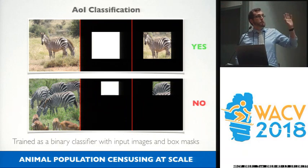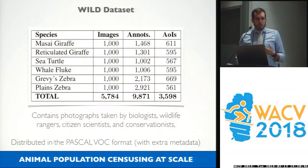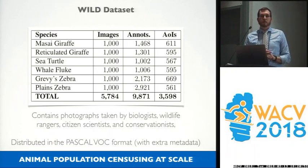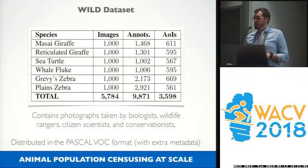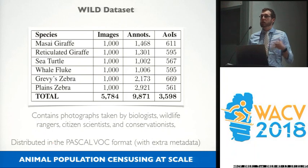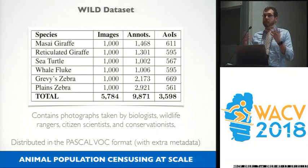We also produce a new dataset that includes six species of interest: two species of zebra, two species of giraffe, whale flukes, and sea turtles. These are photographs taken by actual biologists, wildlife rangers, citizen scientists, and conservationists on the ground in Kenya or off the coast for the aquatic animals. We distribute this dataset freely in Pascal VOC format for anybody to try. These are harder in-situ examples that go beyond what you would normally see in ImageNet or COCO.